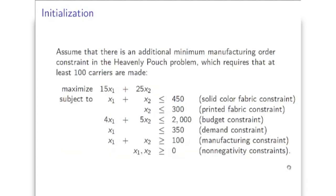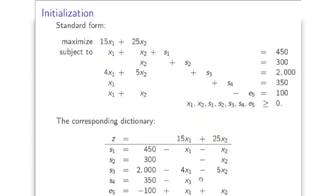Let's consider another example where we added an extra constraint, the manufacturing constraint, to the heavenly pouch problem. Here we are required to manufacture at least 100 units - this is the minimum order. As a result, when we try to set up this LP in standard form after introducing the slack and excess variables, we see that setting the non-basic variables x1 and x2 to 0 will result in e5 equal to minus 100, which is not acceptable. So somehow we need to overcome this problem in order to get an initial basis.